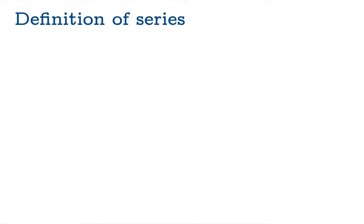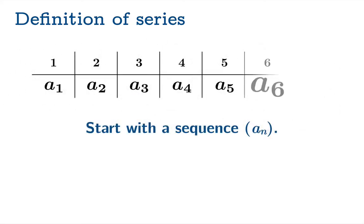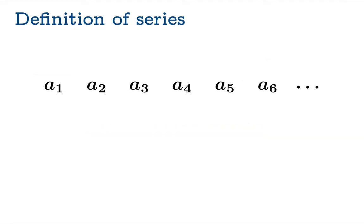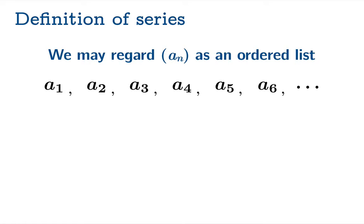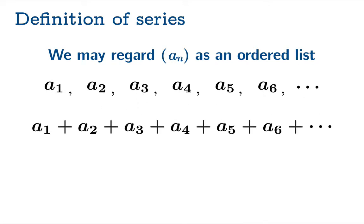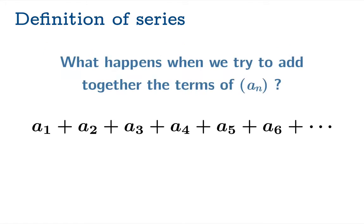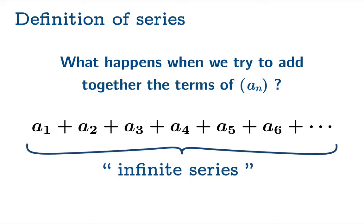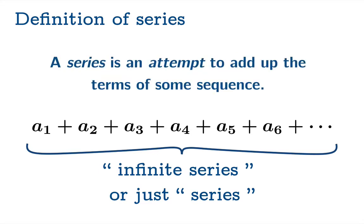Here's the definition of series. We'll start with a sequence, a_n. If you have a sequence, you can just think of it as an ordered list. One of the things you could do with this list is insert plus signs between each term. So a very natural question is: what happens when we try to add together the terms of a given sequence? This gadget we get, we call an infinite series, or simply a series — it's implicit that we're talking about an infinite collection of terms.